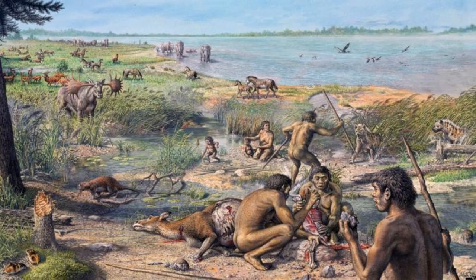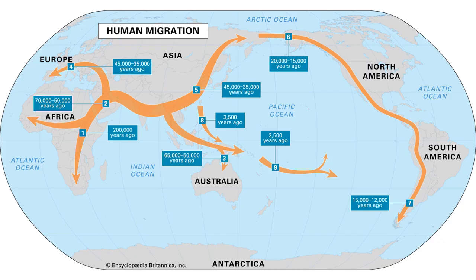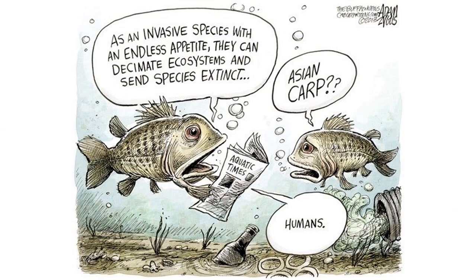Humans originated in Africa sometime between 200 and 300,000 years ago. Early humans left Africa sometime between 50 and 70,000 years ago and spread across the globe. Today, humans inhabit every land mass on the planet, even Antarctica, to an extent. One could argue, then, that humans are the ultimate invasive species.